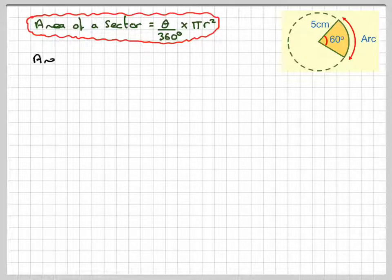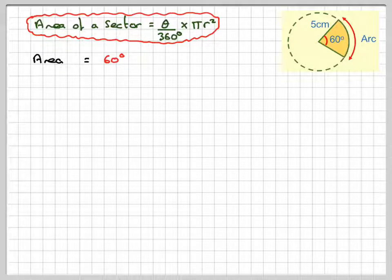So that's going to be, in this case, 60 divided by 360 times pi times r squared, which is going to be 5 squared.